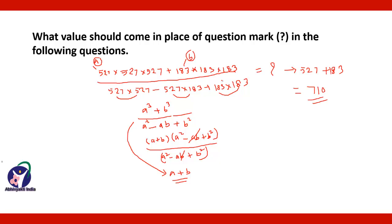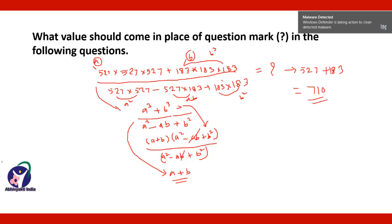Once again: replacing 527 by A and 183 by B, the numerator is A cubed plus B cubed, and the denominator is A squared minus AB plus B squared. Using the formula A cubed plus B cubed equals (A+B)(A squared minus AB plus B squared), the brackets cancel and you get A plus B. So the answer is 527 plus 183, which is 710.